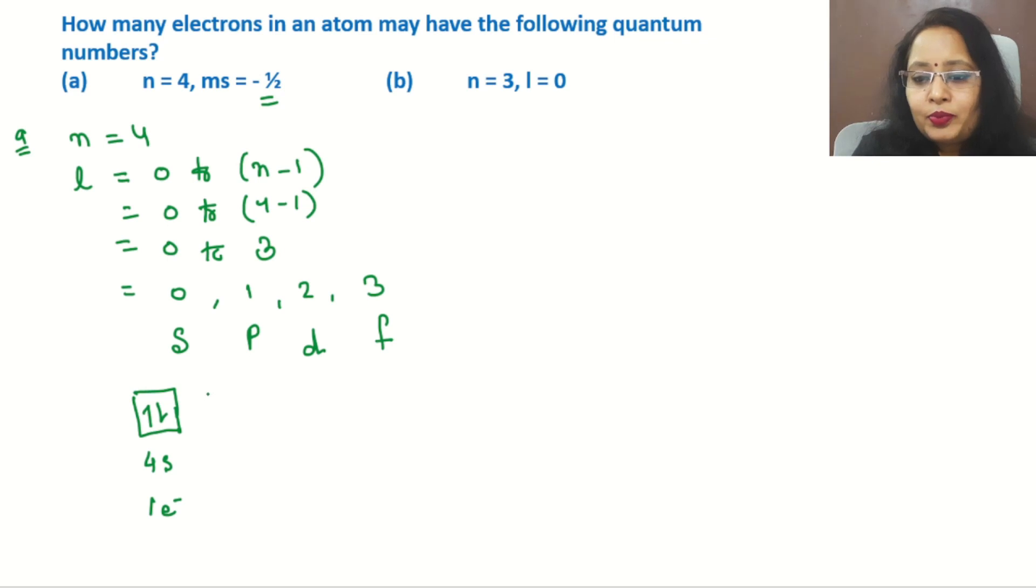Now for p: the p subshell has 3 orbitals. This is 4p, having 6 electrons total. In these 6 electrons, 3 have positive spin and 3 have negative spin. So the number of electrons having negative spin is 3 electrons in the p orbital.